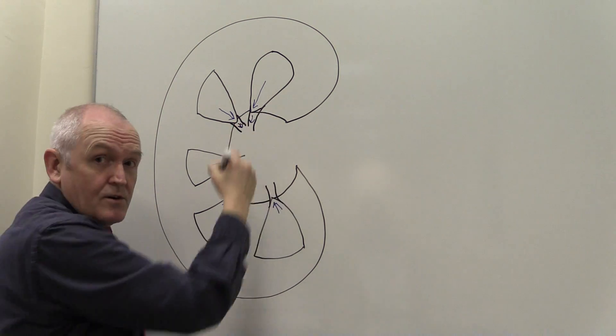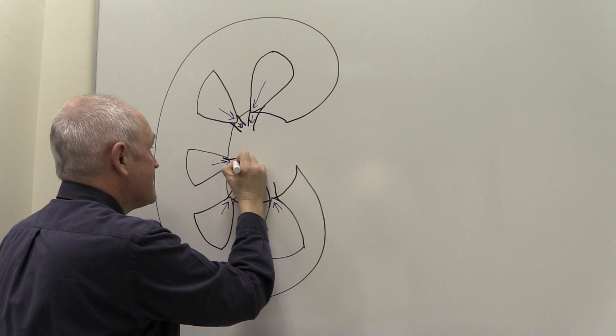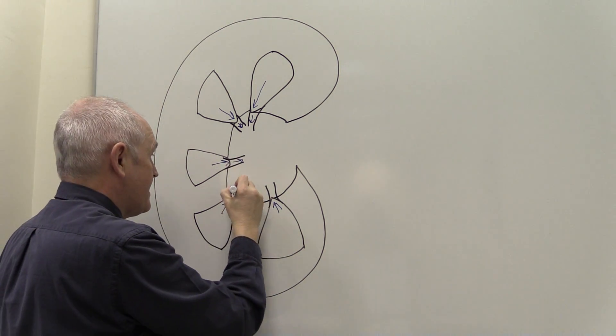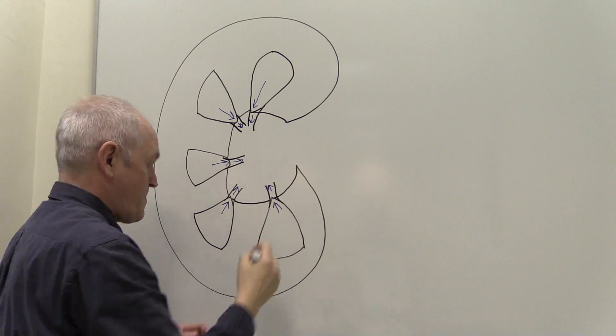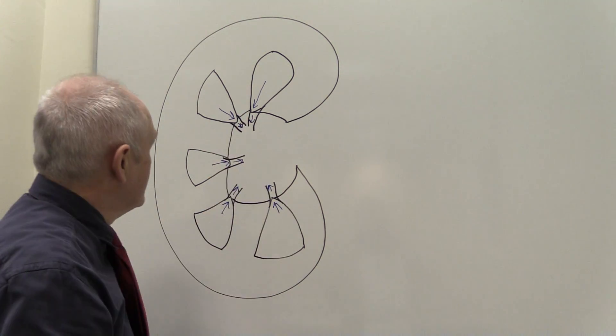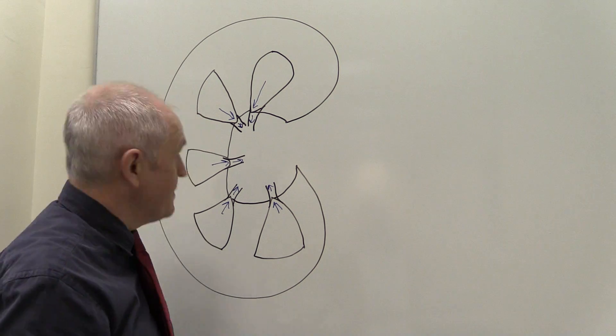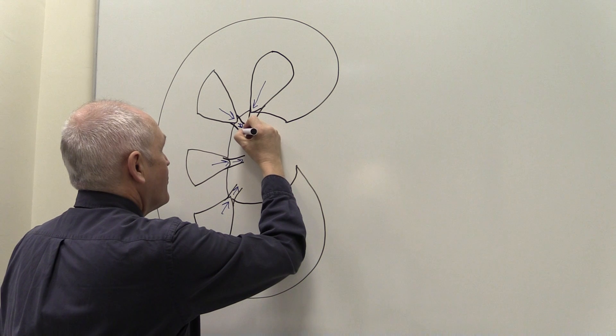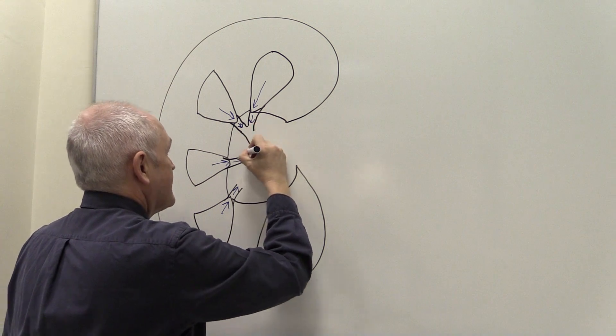And these are the renal calyces. So that would be a calyx; collectively they are calyces. And these initial calyces are relatively small, but they can join up to form larger calyces.